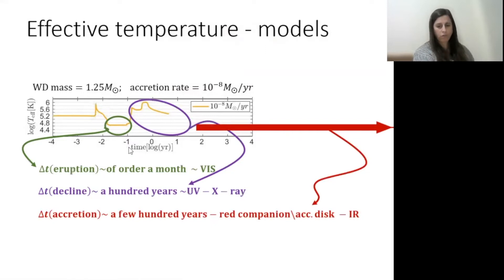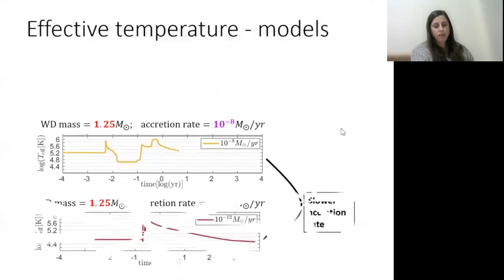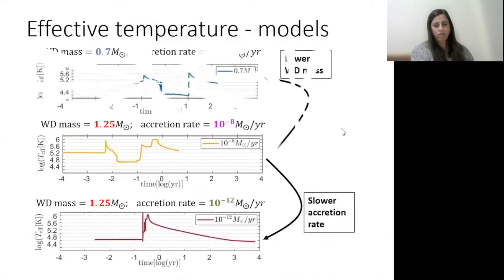Visual during the eruption, UV and soft x-ray after the eruption, and then during the long accretion phase, the cold red donor and the accretion disk may be detectable in the IR. Now, if we use a different accretion rate or a different white dwarf mass, the time scales change.